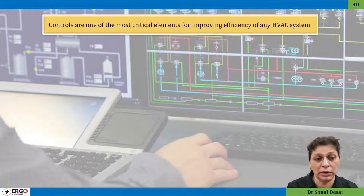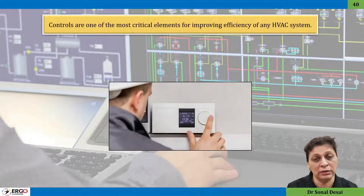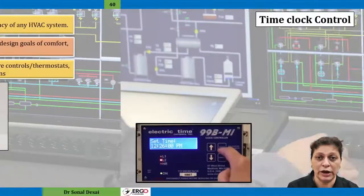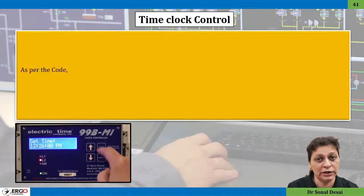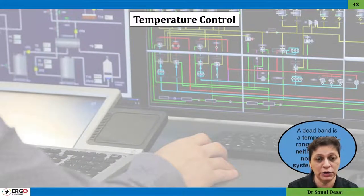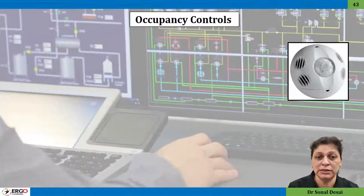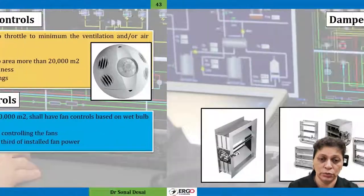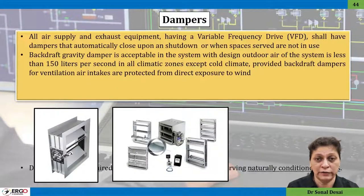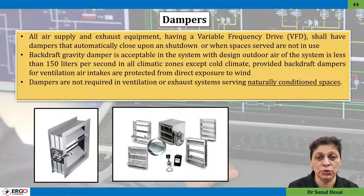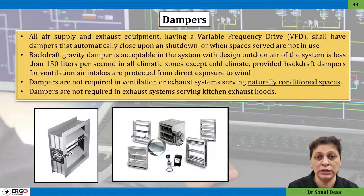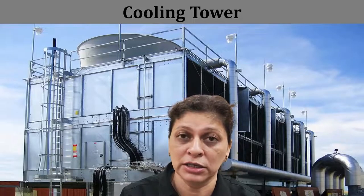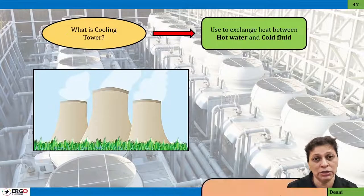Then comes building controls. Whether a building uses a building automation system or manual control, effective control strategies are important. Different occupancy sensors, temperature controls, and time switches are explained. HVAC controls are particularly important — in many locations, air-side economizers are used, requiring proper damper controls, which are also covered in this series.